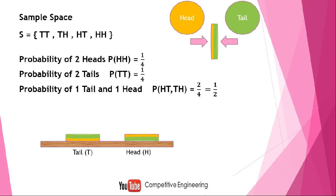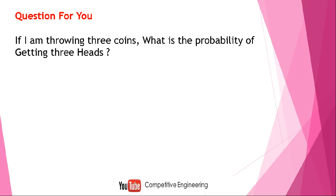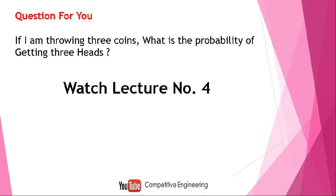Moving forward to three coins: what is the probability of getting three heads? When throwing one coin the sample space size is two, with two coins it is four, so with three coins it will be larger. We don't need to write the full sample space here — this will be covered in the next lecture. You can try writing the sample space yourself and comment the answer, then watch lecture number four for the easy method. Thank you for watching.